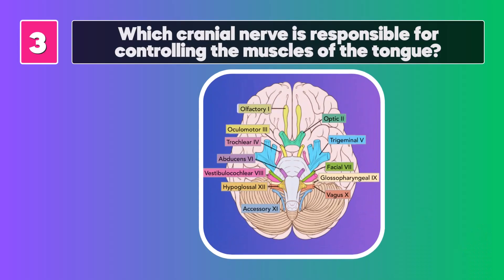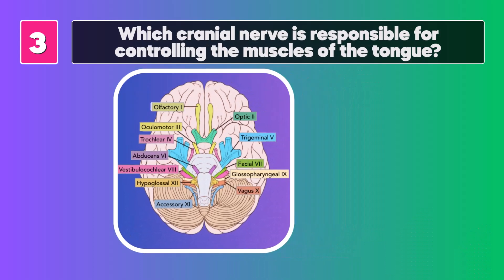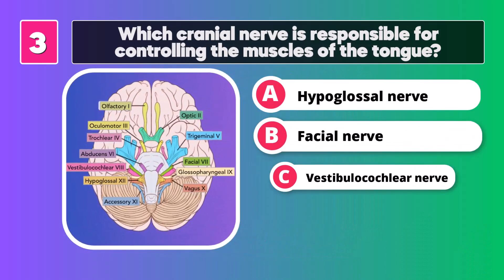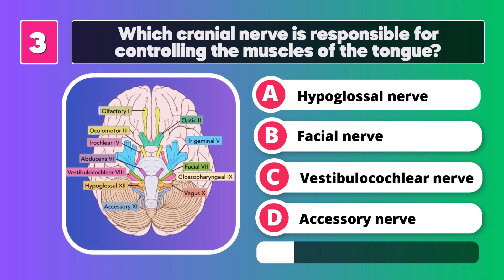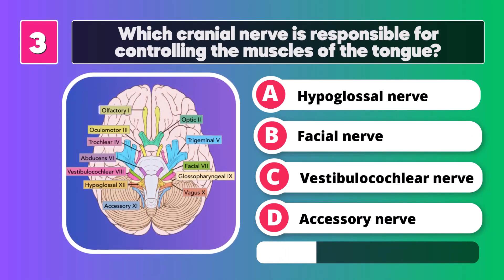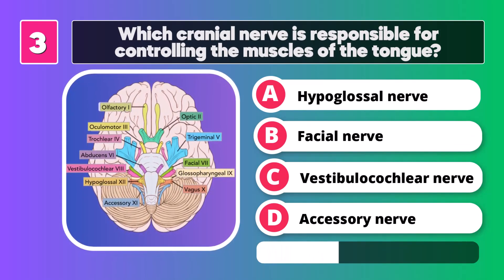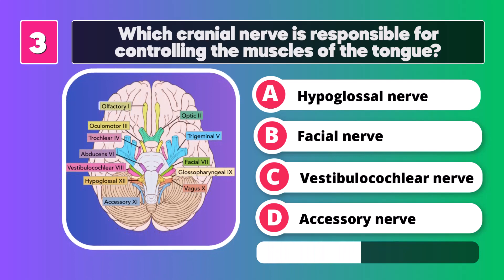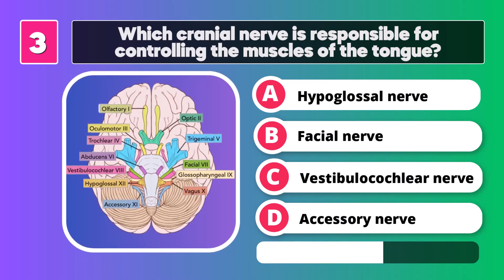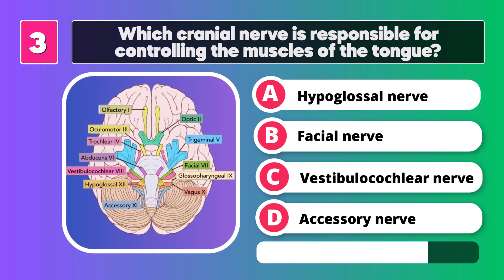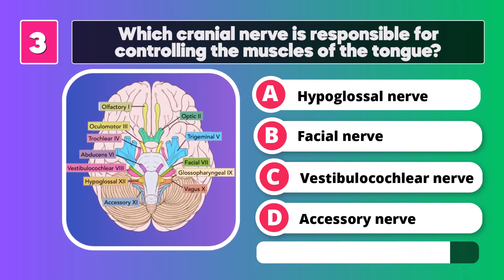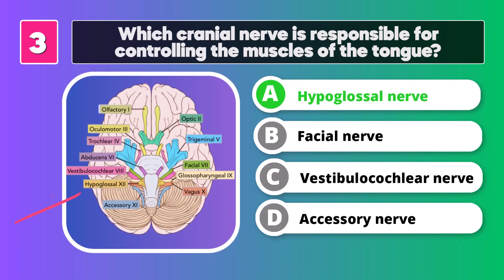Which cranial nerve is responsible for controlling the muscles of the tongue and for providing sensory information from the posterior third of the tongue? Hypoglossal nerve.